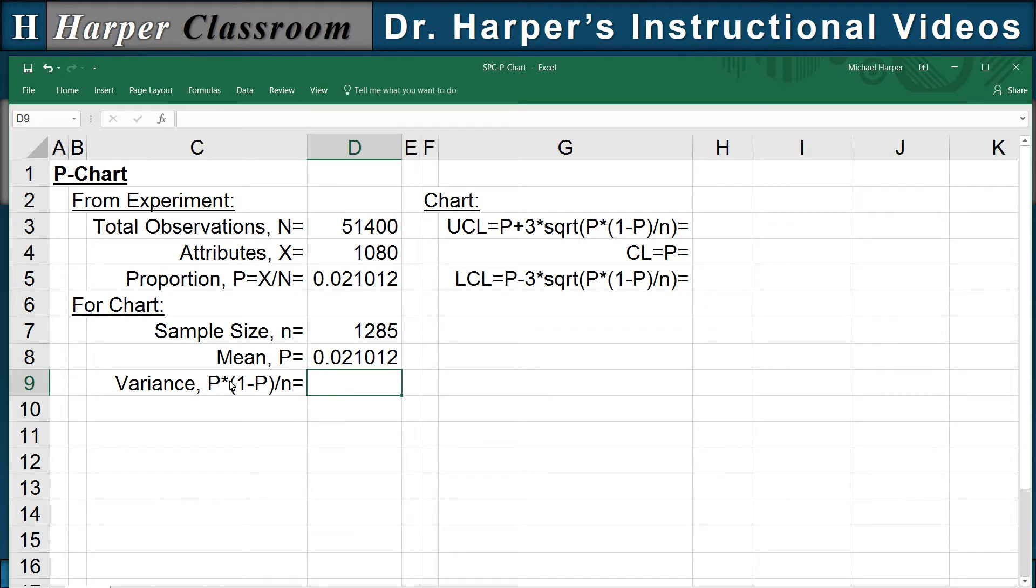And the equation for the variance for the binomial theorem is p times 1 minus p over N. So that's going to be p times 1 minus p, but it's divided by the sample size for the chart.